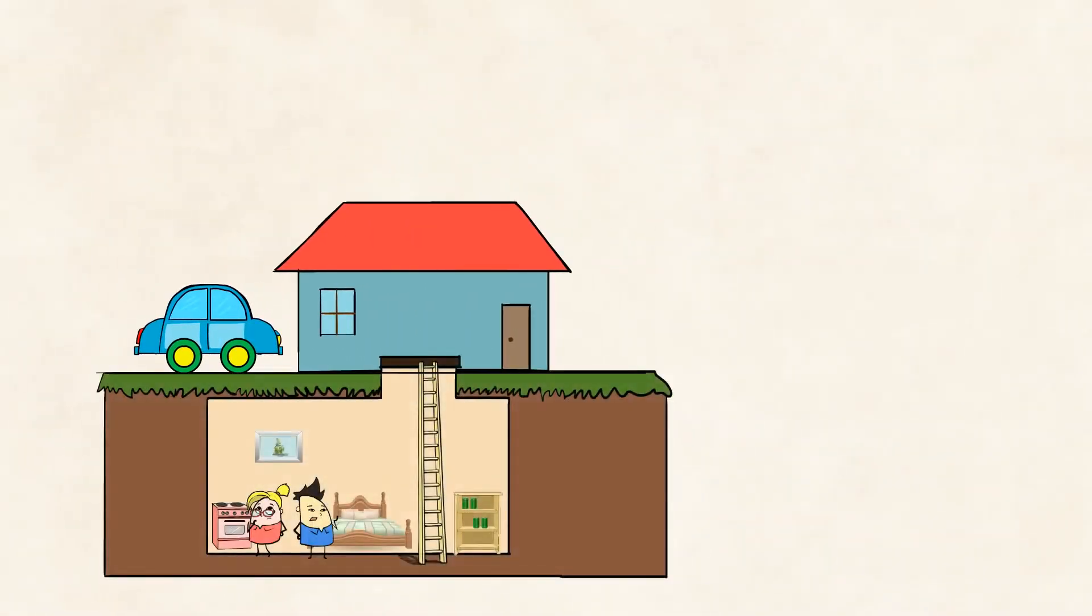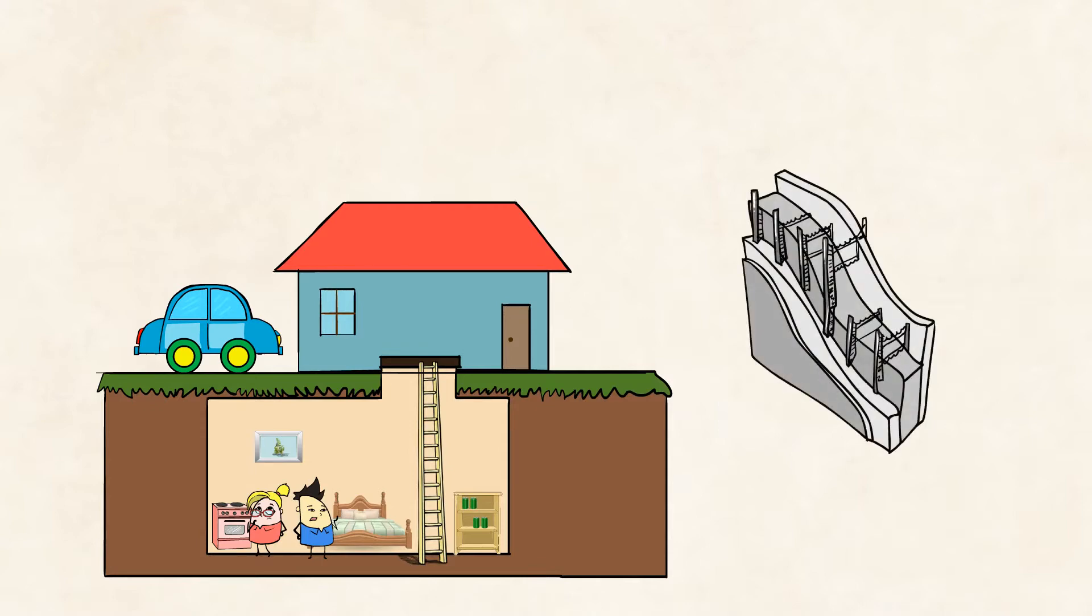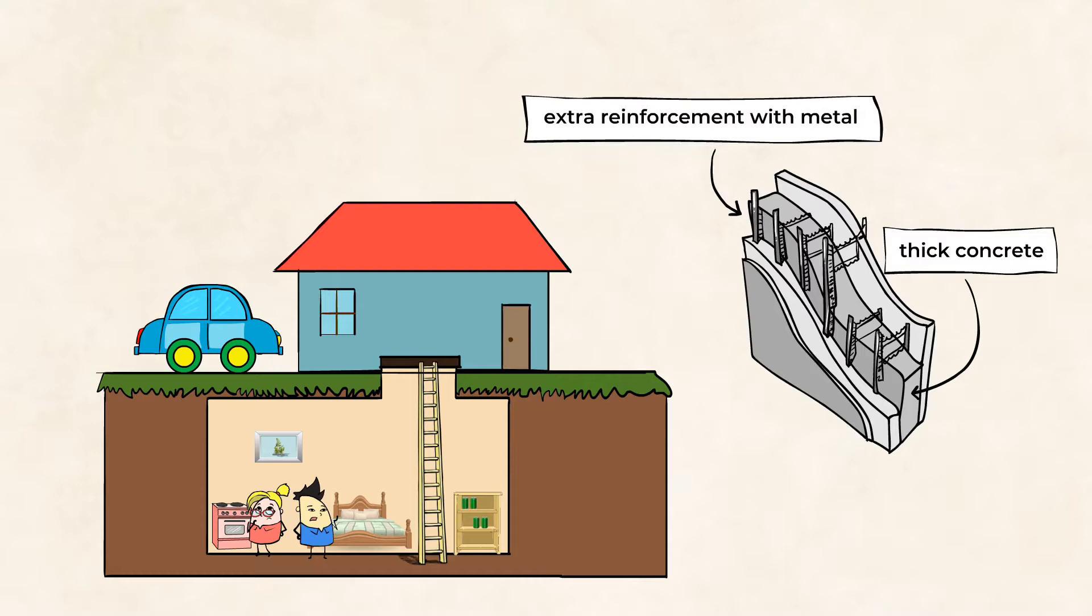Storm shelters are specially designed safe places that are usually under the ground to protect people from tornadoes. Sometimes they're even under someone's house. The walls of these shelters are usually built with very thick concrete and have extra reinforcement with metal. This structure is to make sure that people stay safe during a tornado.